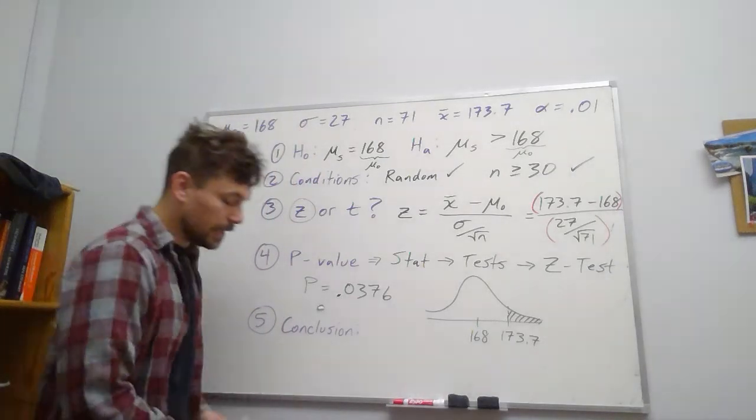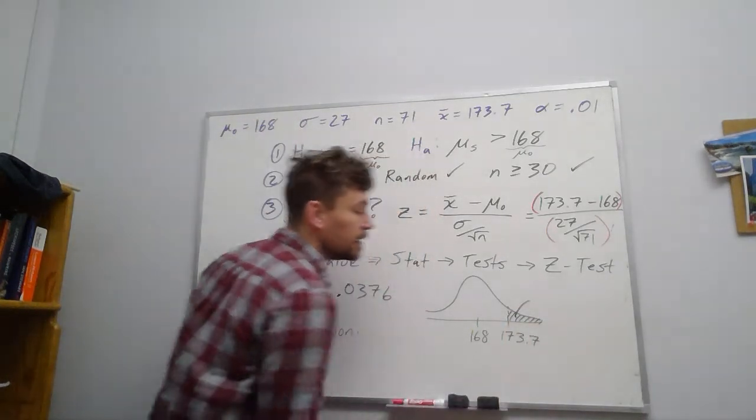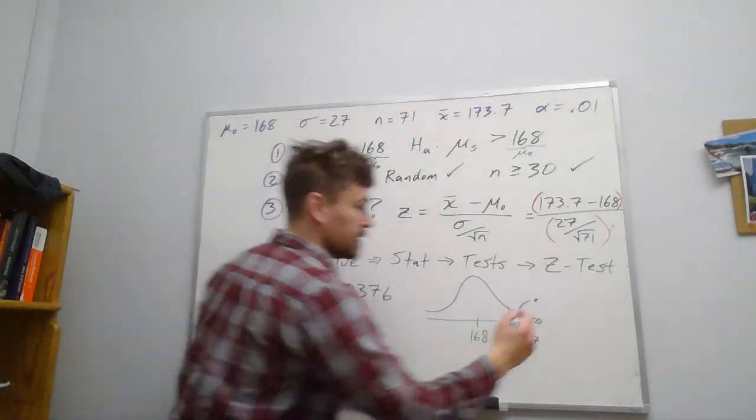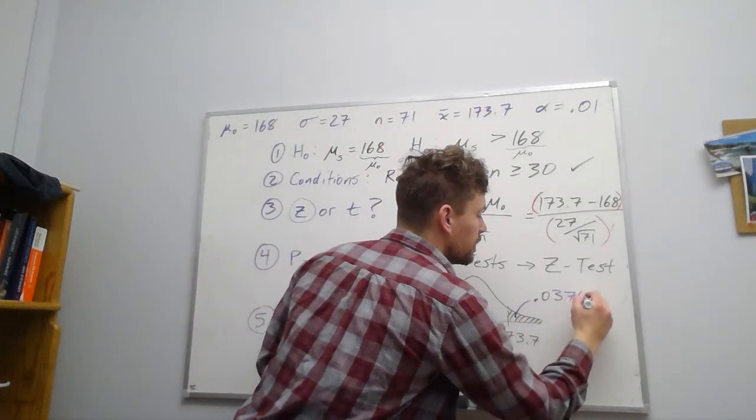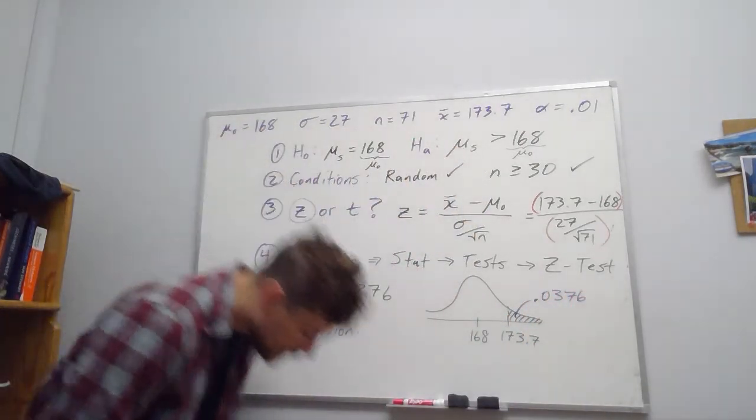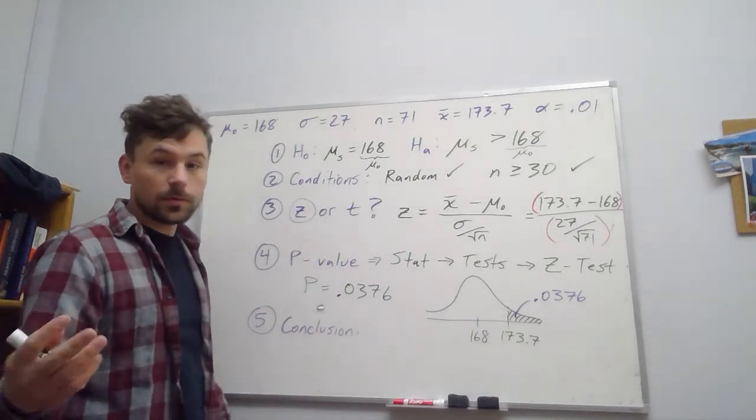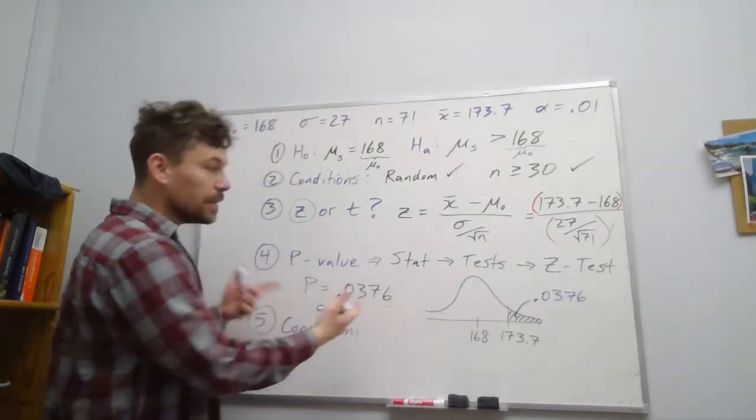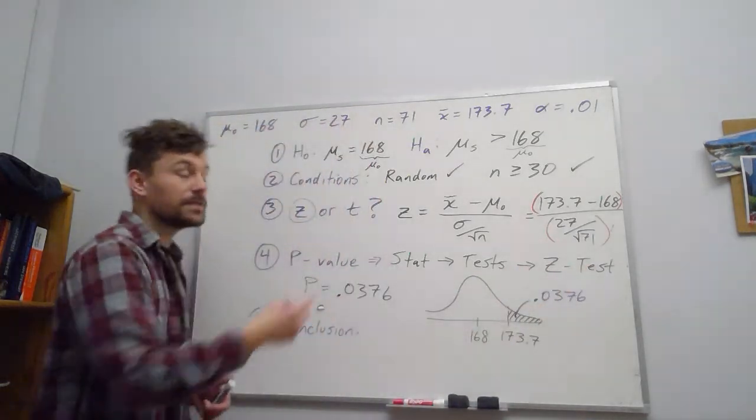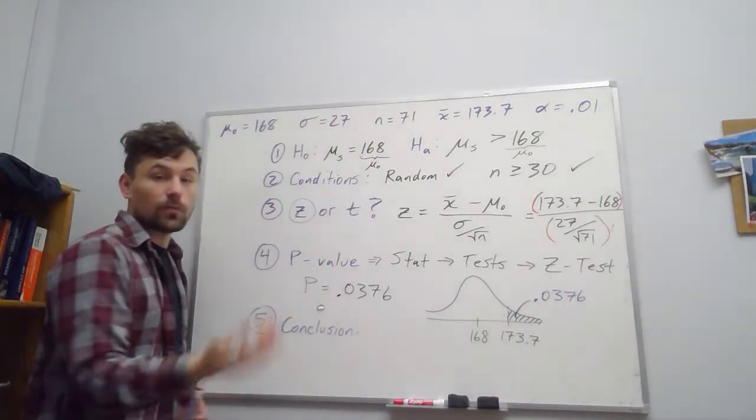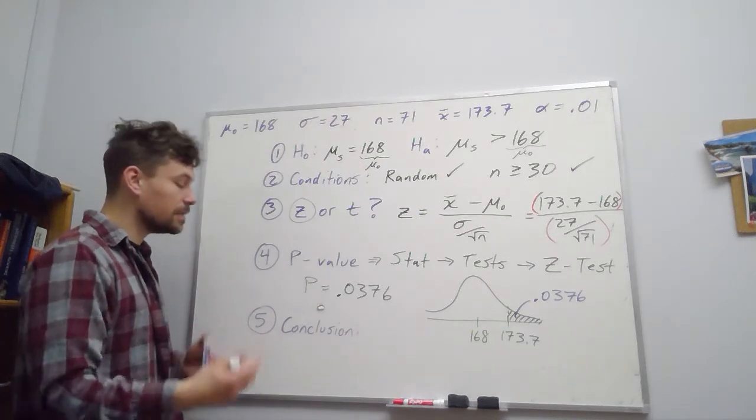Again, we know that we're only looking at the one side because this is a one-sided test. We know that we're looking to the right because we're looking at having a value larger than μ₀. So we're finding this probability, and we find that that is, right, 0.0376. So that's something we've done many times before using normal CDF. So nothing too crazy there. That's basically what the z-test is doing. It's kind of taking all of your inputs, running a normal CDF, right? Same sort of thing.